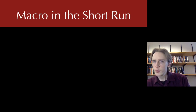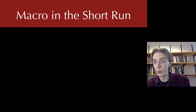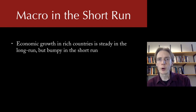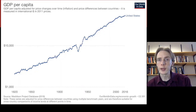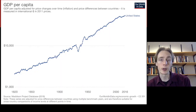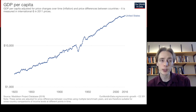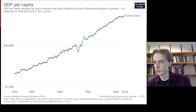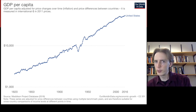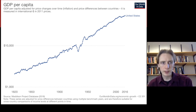One thing we saw in the lectures on macroeconomic growth is that economic growth is very steady in the long run — about a two or three percent increase per year for several hundred years, with really the only major interruption during the Great Depression. But if we zoom in, it's a lot bumpier. It looks very smooth if we zoom out, but when we zoom in it fluctuates around that very straight trend.